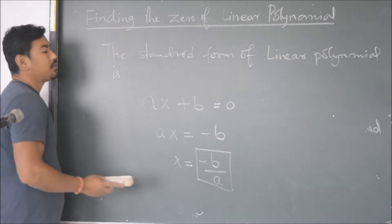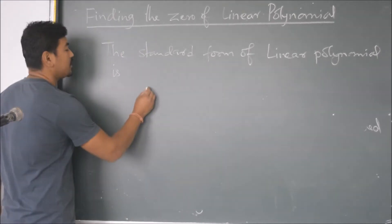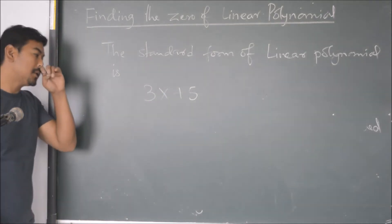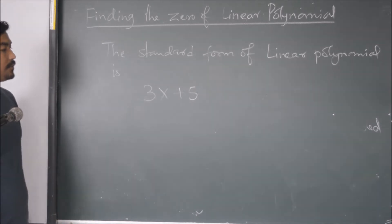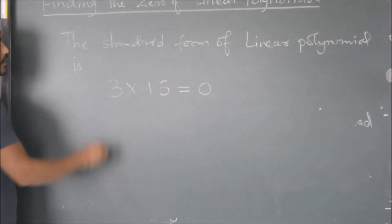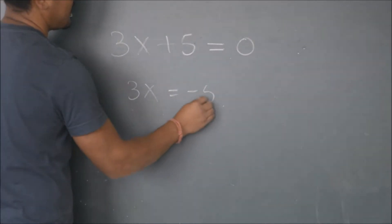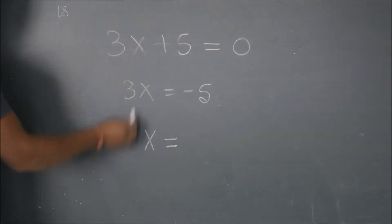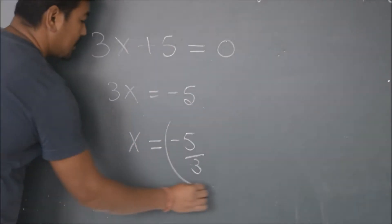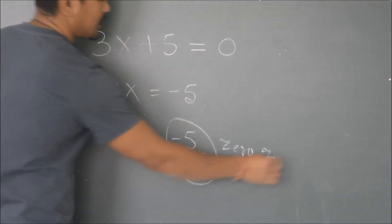Let me apply this to a specific question: the linear polynomial 3x plus 5. We need to find its zeros. The first step is to equate it to zero: 3x plus 5 equals 0. Moving plus 5 to the other side gives 3x equals minus 5, so x equals minus 5 by 3. This is the zero of the given polynomial.